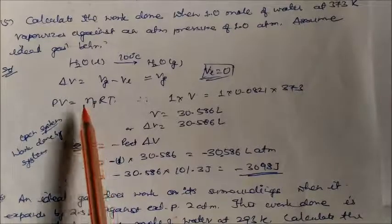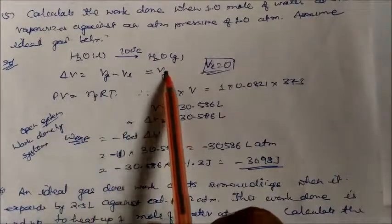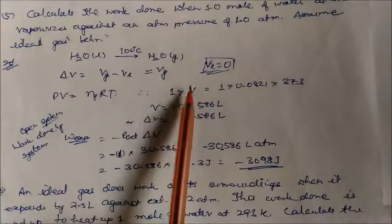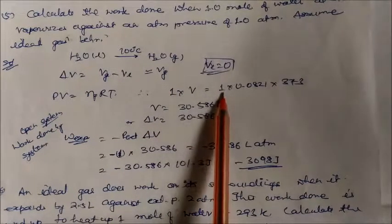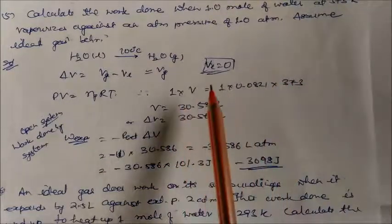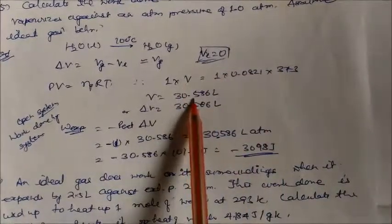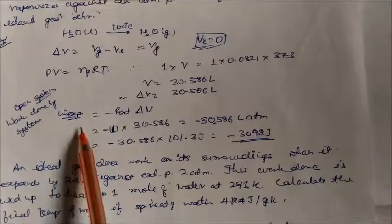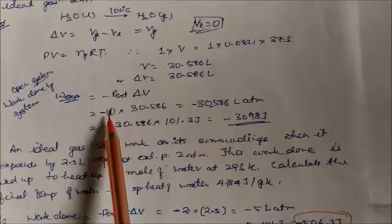Problem 2: A system does 200 joules of work and simultaneously absorbs 150 joules of heat. By the First Law, ΔU = q + w = 150 + (−200) = −50 joules. Here work is done by the system, so w is negative.